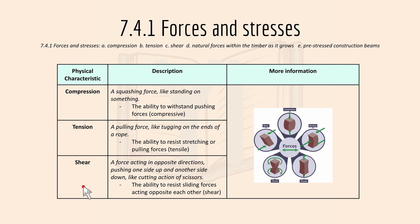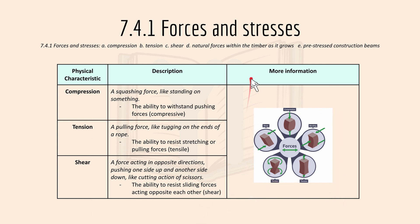Shear is the force acting in opposite directions, like pushing one side up and another side down — like a cutting action of scissors. It's basically the ability to resist sliding forces acting opposite to each other. Here's a visual diagram to show you what the different forces are.